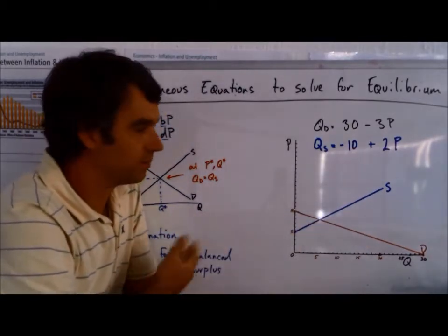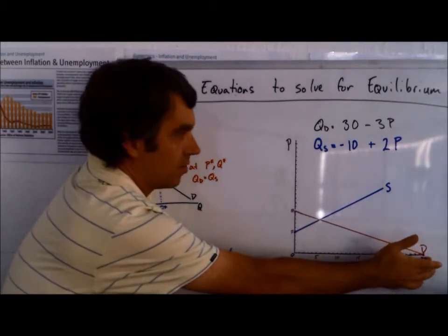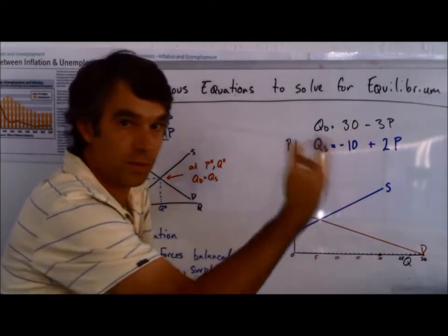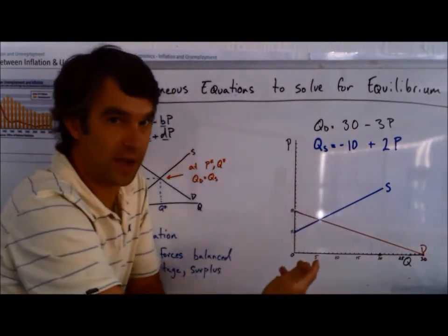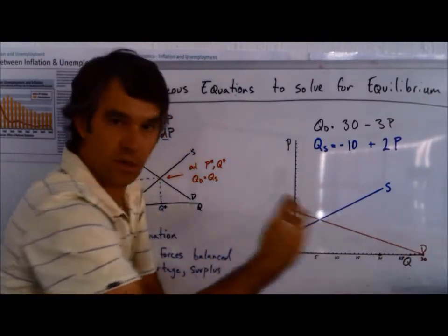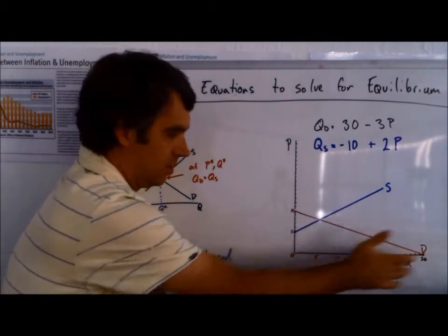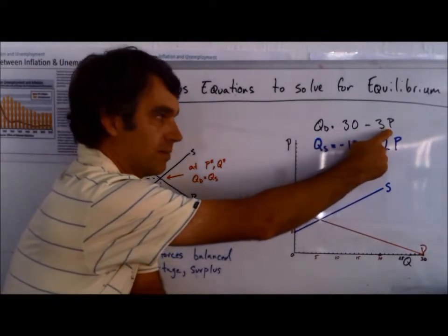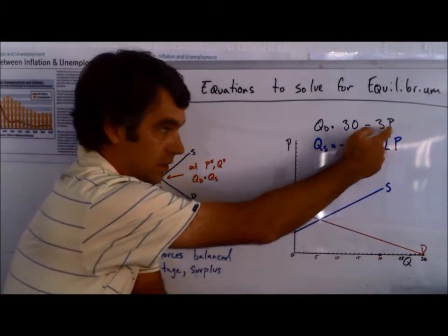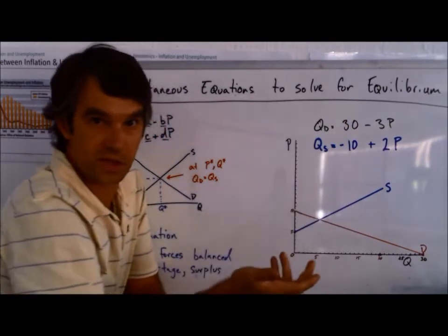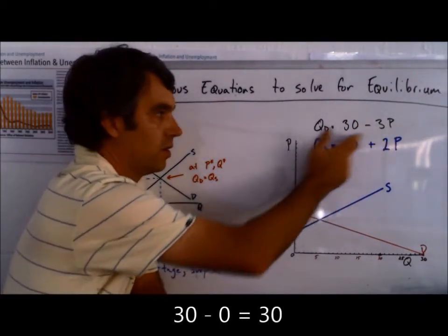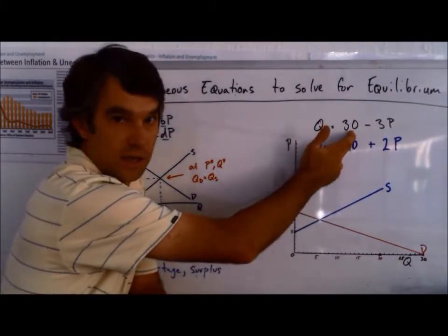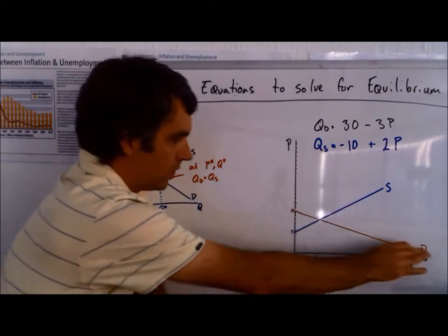Now let's look at the demand function. We start here at 30, which is our A variable. Remember the A variable will always be positive with demand, so we can always just put it on the graph. It's 30 at a price of 0. Remember, 30 minus 3 times a price of 0 is 0, so 30 minus 0 is 30. So when price is 0, quantity demanded is 30.